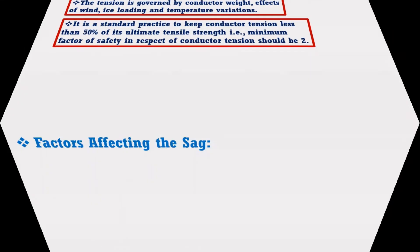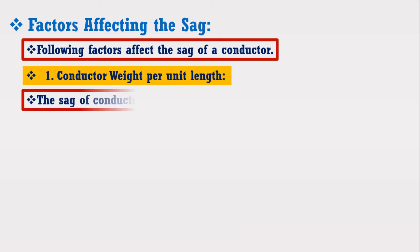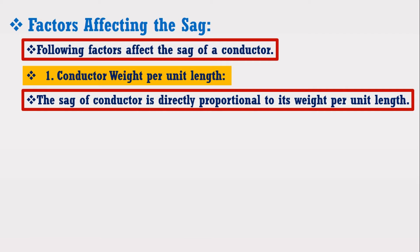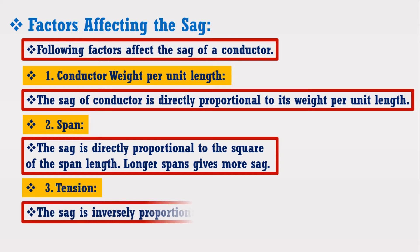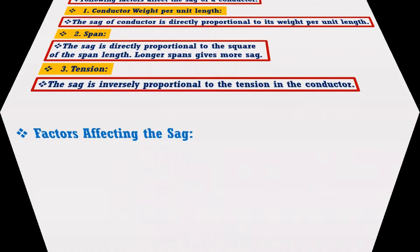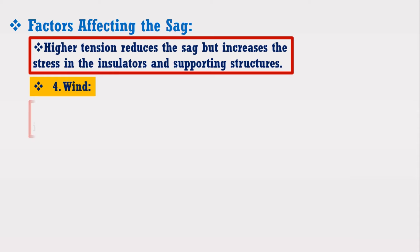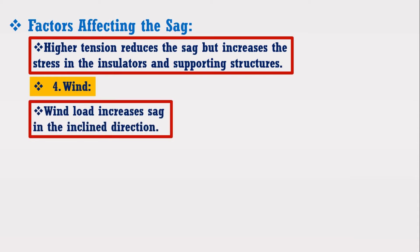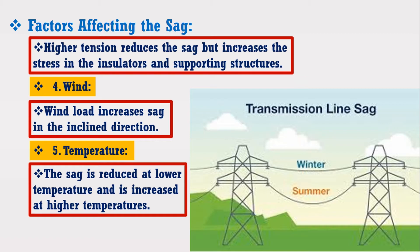Now I am going to discuss the factors affecting the sag. 1. Conductor weight per unit length: the sag of a conductor is directly proportional to its weight per unit length. 2. Span: the sag is directly proportional to the square of span length; longer span gives more sag. 3. Tension: the sag is inversely proportional to the tension in the conductor; higher tension reduces sag but increases stress in the insulators and supporting structures. 4. Wind: wind load increases the sag in the inclined direction. 5. Temperature: the sag is reduced at lower temperature and is increased at higher temperatures, as shown in the figure.